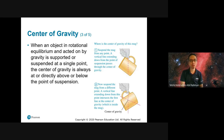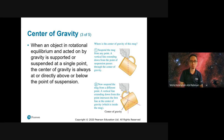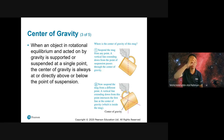To find the center of gravity, if you suspend an object from any point, you can draw a vertical line extending down from the point of suspension — this line passes through the center of gravity. If you then suspend the object from a different point and draw another vertical line, the center of gravity is at the intersection of those two lines.